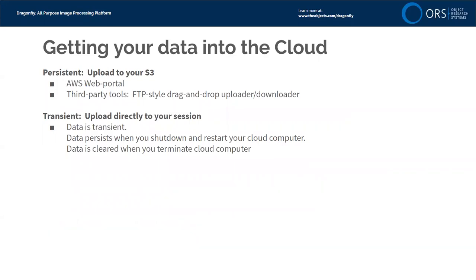For getting data into the cloud, there's a web portal where you can upload files to Amazon S3 storage, as well as third-party drag-and-drop tools similar to FTP programs. Within a Dragonfly cloud session, there's also a button to upload data directly. Note that data persists when you shut down and restart a cloud computer, but the normal behavior is to terminate the instance so it stays fresh and data gets cleared. You need to pay attention to whether you're using persistent or transient storage.